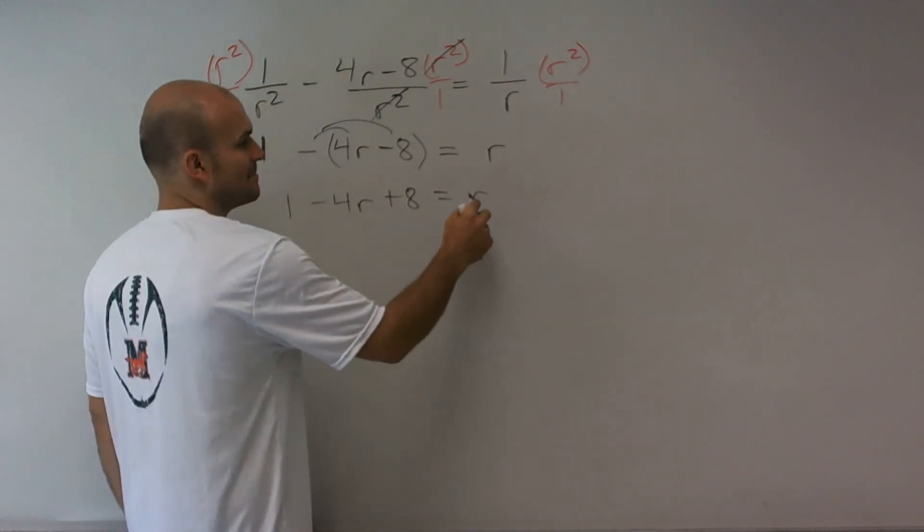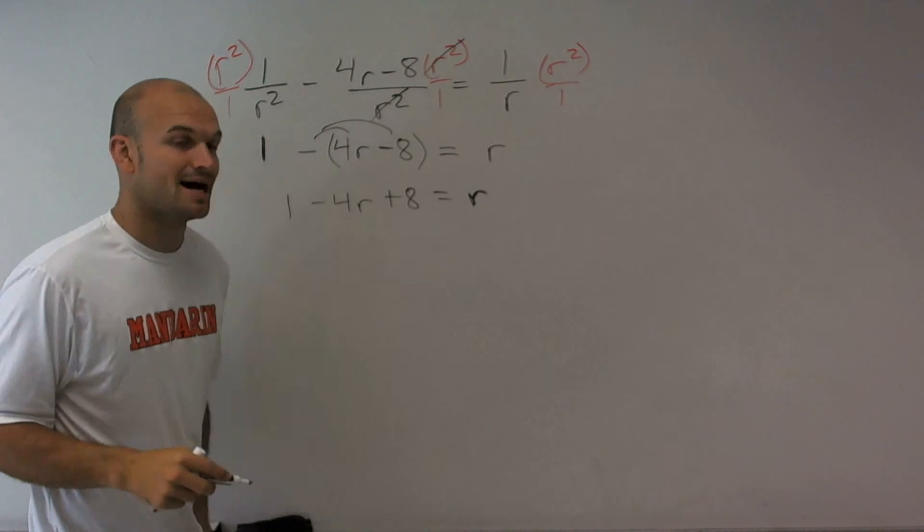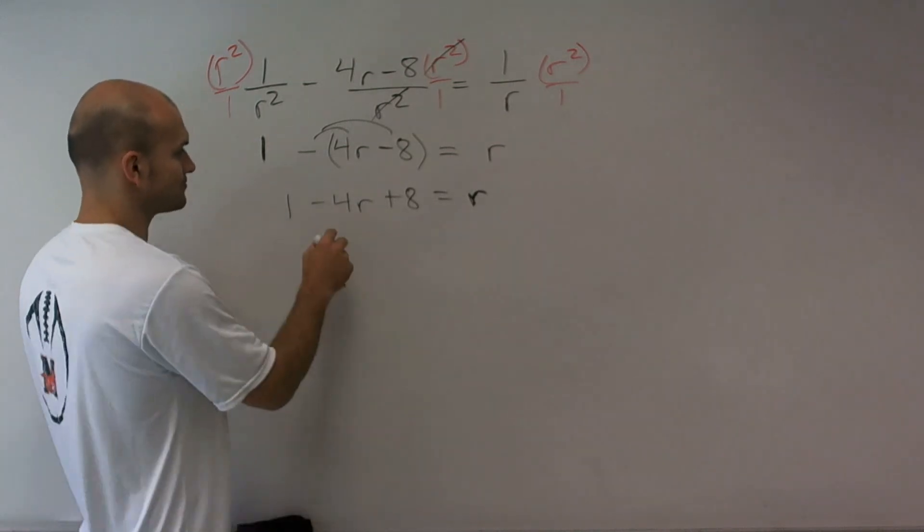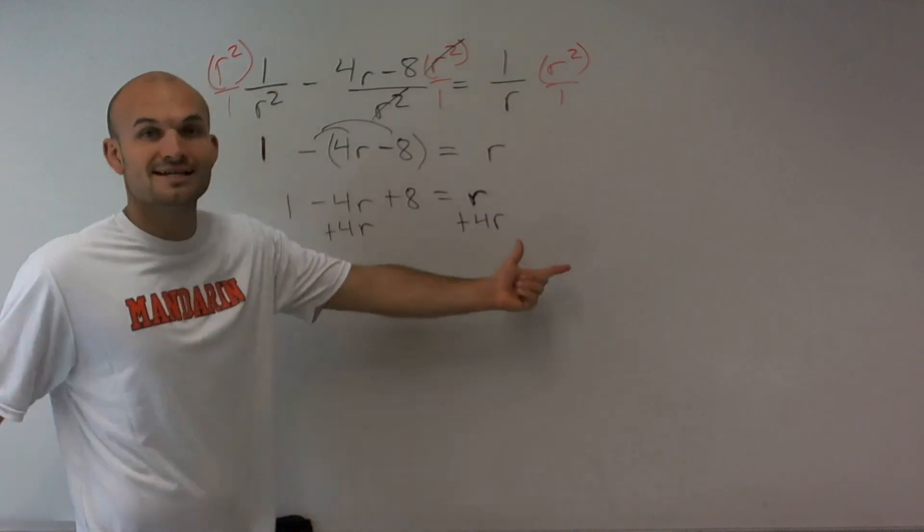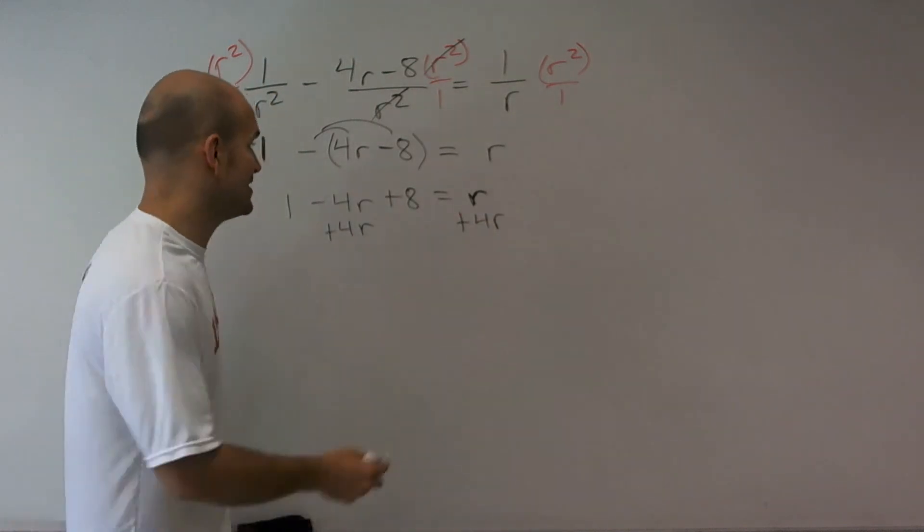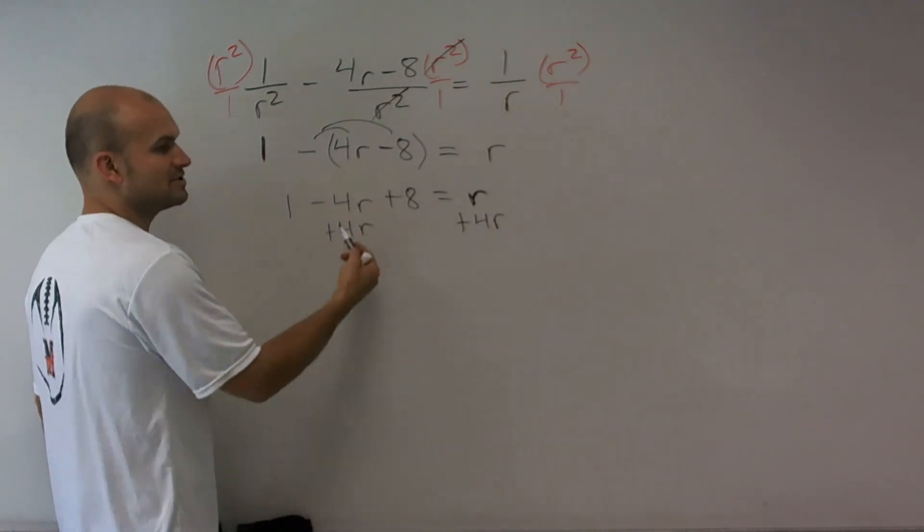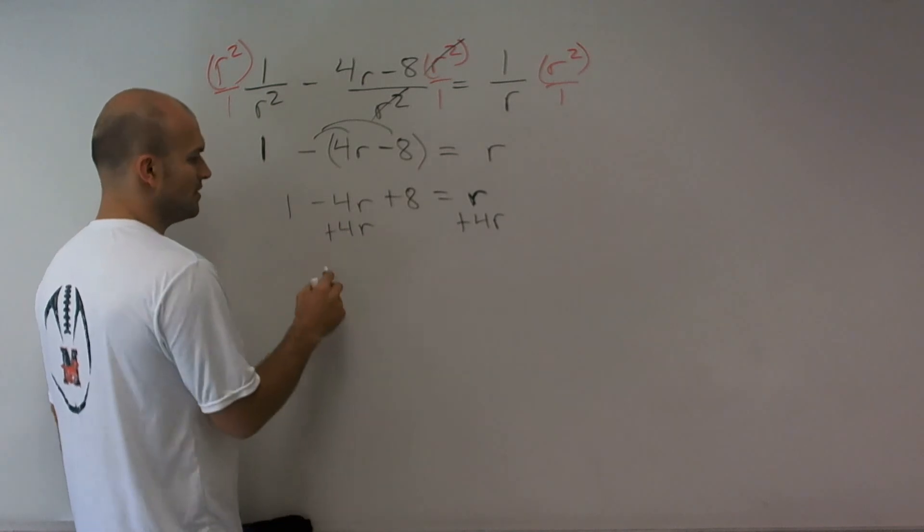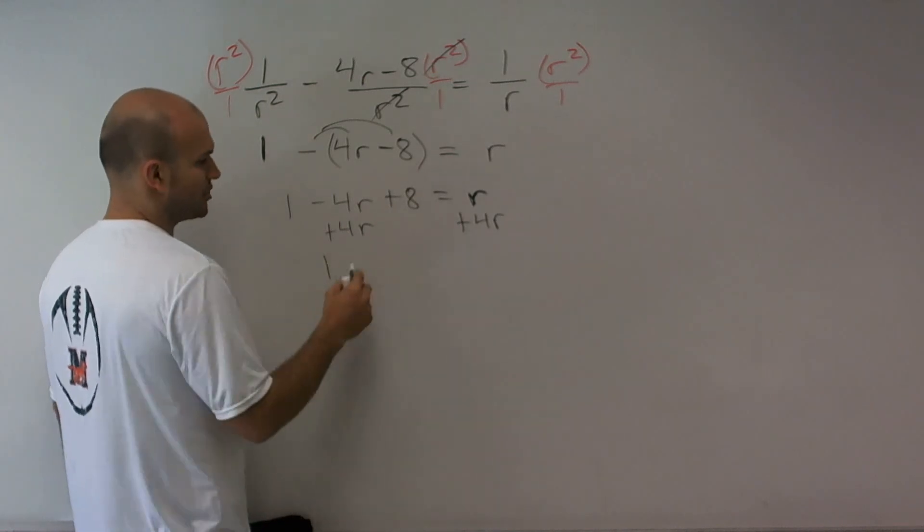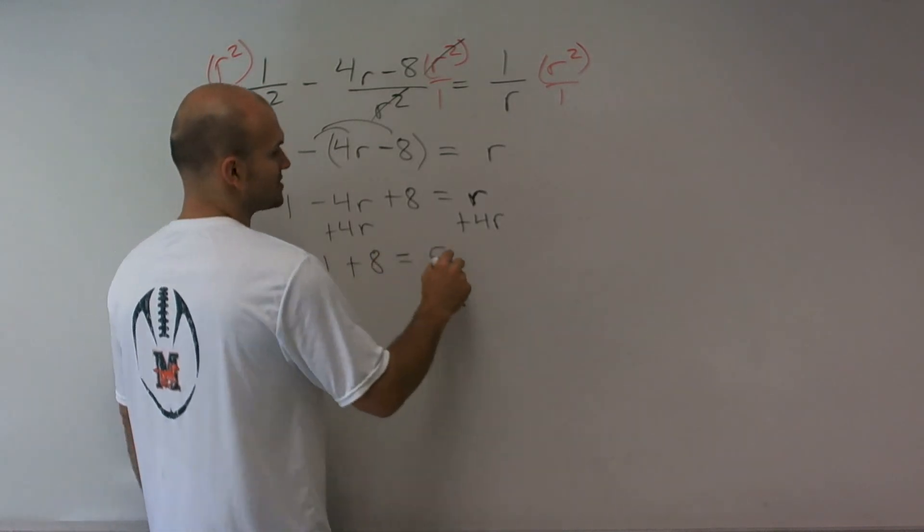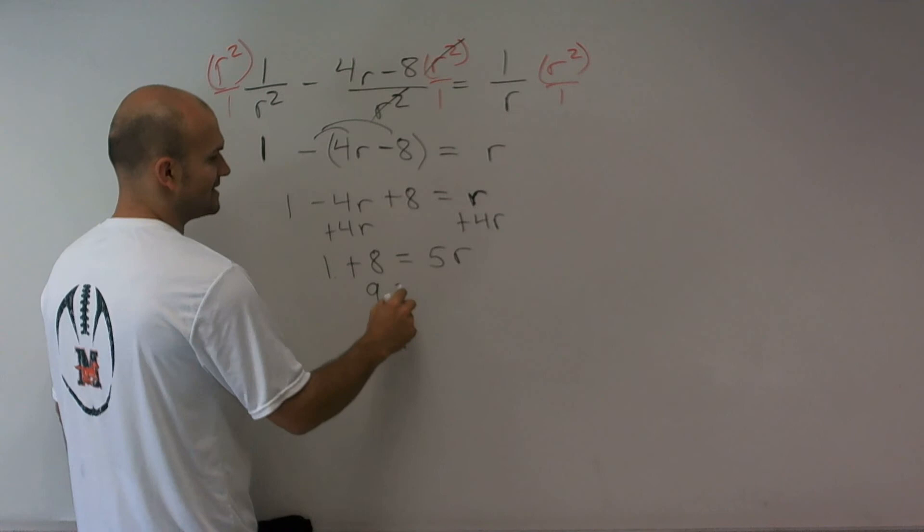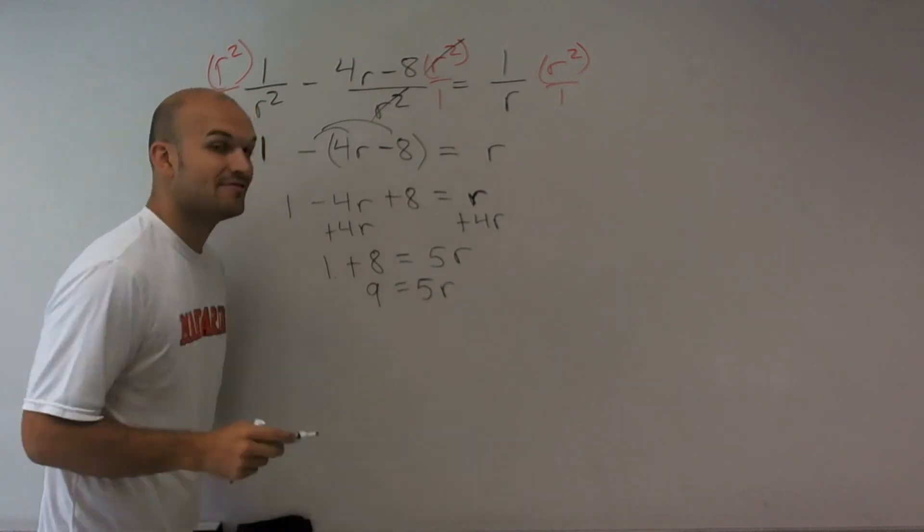Now what I need to do is get my variable on the same side. Since this side already has the variables on it, I'm going to get everything over there, so I'll add 4r by using the addition property of equality. That's going to go to 0, so I'm just left with 1 plus 8 equals 5r. Combine these, I get 9 equals 5r.